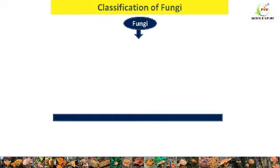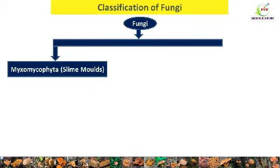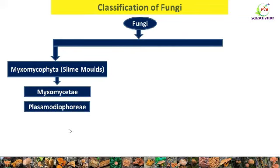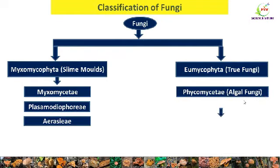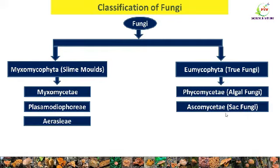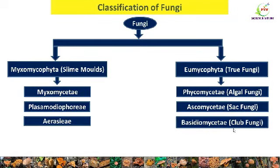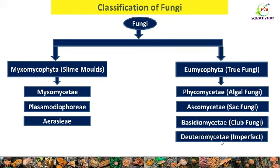Now we will see the classification of fungi. Fungi are mainly divided into two groups. The first division is Myxomycophyta, also called slime molds, further divided into Myxomycetes, Plasmodiophoromycetes, and Acrasiomycetes. The second division is Eumycophyta, also called true fungi, further divided into Phycomycetes or algal fungi, Ascomycetes or sac fungi, Basidiomycetes or club fungi, and Deuteromycetes, also known as Fungi Imperfecti or imperfect fungi. In today's lecture we are going to study the different classes under true fungi.